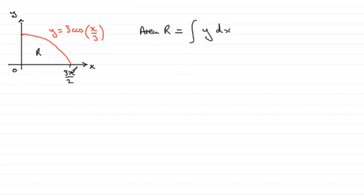If we substitute for y now, 3cos(x/3), I'm going to put the 3 outside the integral because it's a constant. So I've just got to integrate the cosine of x/3 with respect to x, going from 0 to 3π/2.